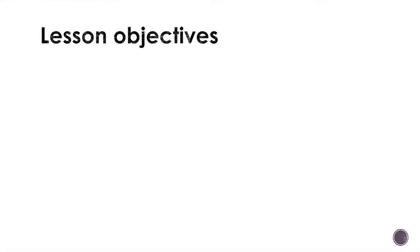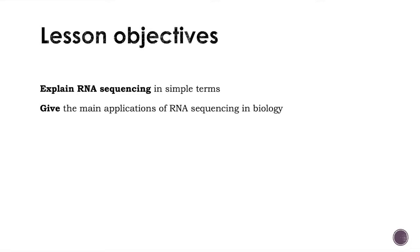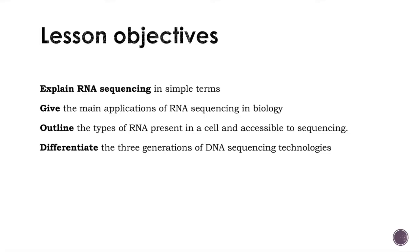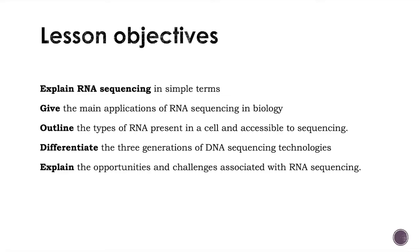The lesson objectives of this video are to first explain what RNA sequencing is in simple terms, then to give you the main applications of RNA sequencing in biology, outline the types of RNA present in a cell that you can sequence using this technology, how to differentiate the three generations of DNA sequencing, and explain the opportunities and challenges associated with RNA sequencing.